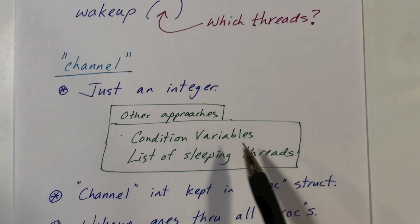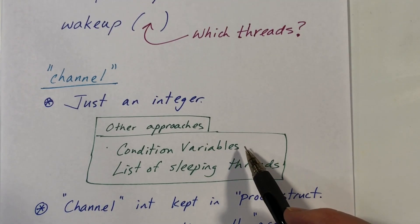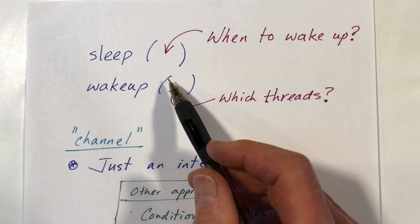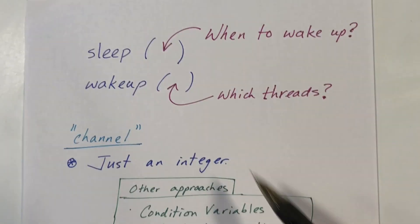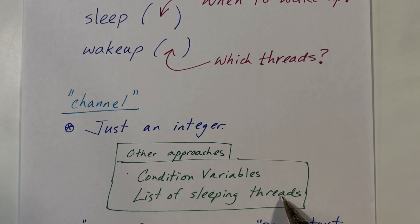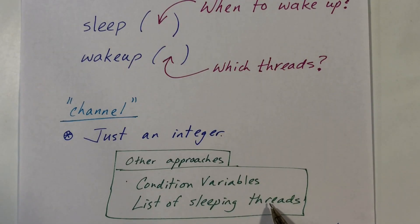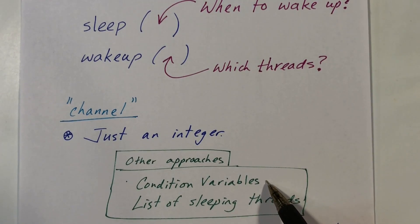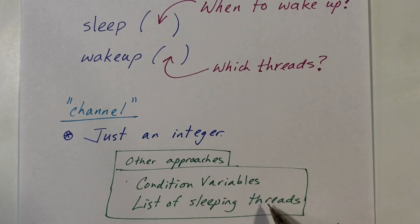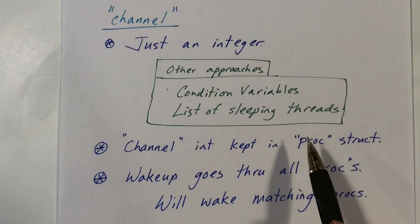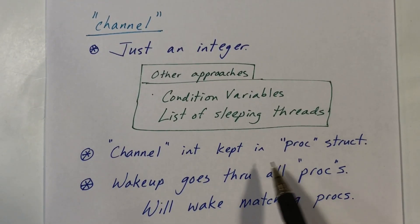There are other approaches used in different systems. Sometimes you provide a list of threads — you sleep on a particular set or list of threads, and wakeup is applied to a particular list of sleeping threads and wakes up everything on that list. Some systems also have condition variables, and a condition variable is really fundamentally nothing more than a list of sleeping threads. But this is how XV6 works.